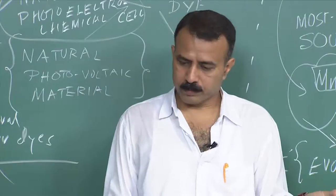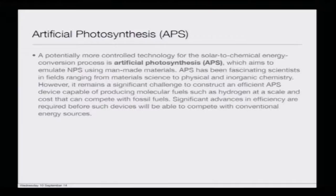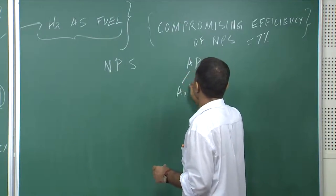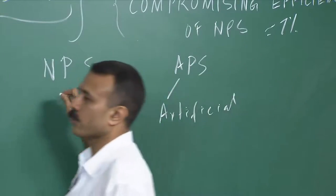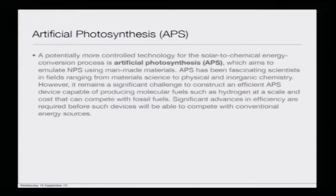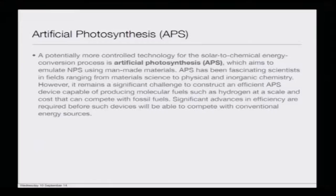Moving to the next slide on artificial photosynthesis: you now have two words — natural photosynthetic system (NPS) and artificial photosynthesis (APS). A potentially more controlled technology for solar to chemical energy conversion, artificial photosynthesis aims to emulate natural photosynthesis using man-made materials. APS has fascinated scientists in fields ranging from material science to inorganic chemistry. However, it remains a significant challenge to construct an efficient APS device capable of producing molecular fuels such as hydrogen at a scale and cost that can compete with fossil fuels.